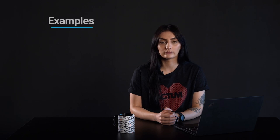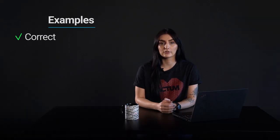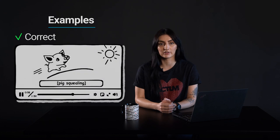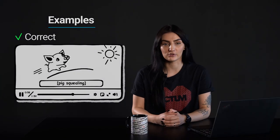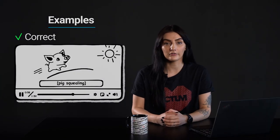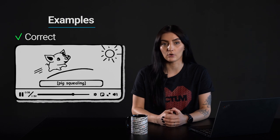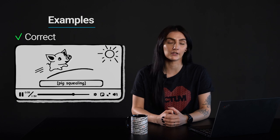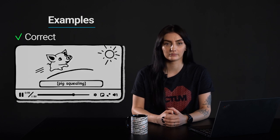Let's take a look at some examples. The following example shows the correct usage or implementation of accessibility. A video about the life of pigs, picturing a pig running over grass while squealing. The video has captions so people relying on captions can understand that the pig is squealing.